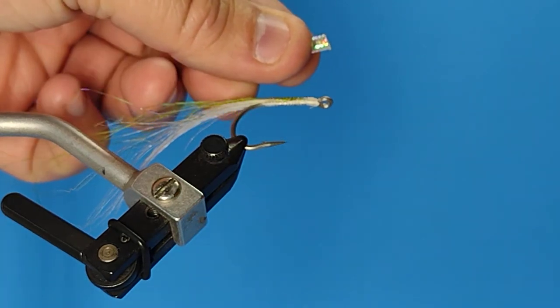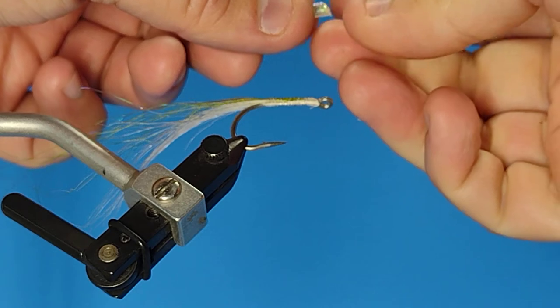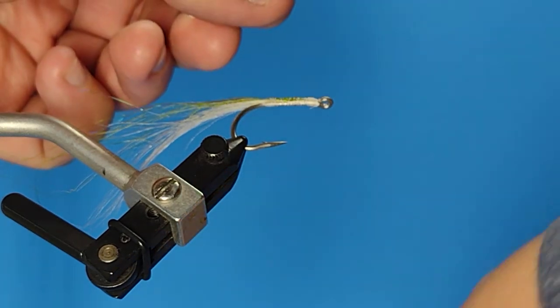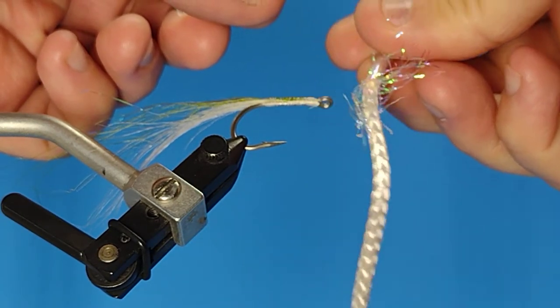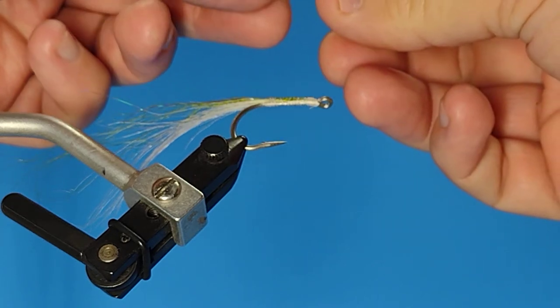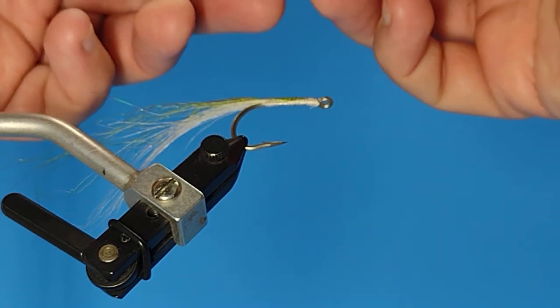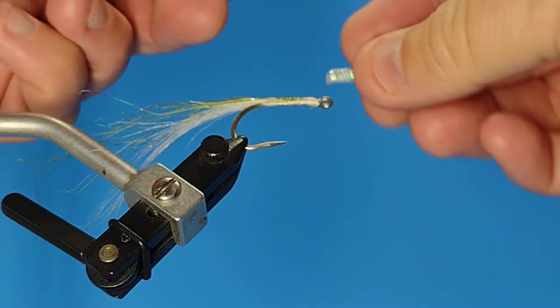And that'll help hold that in place while I work with it instead of flaring out. You can see how this end just gone crazy. So melting it just helps kind of control it for now. So now I'm going to take this and put it on the hook.